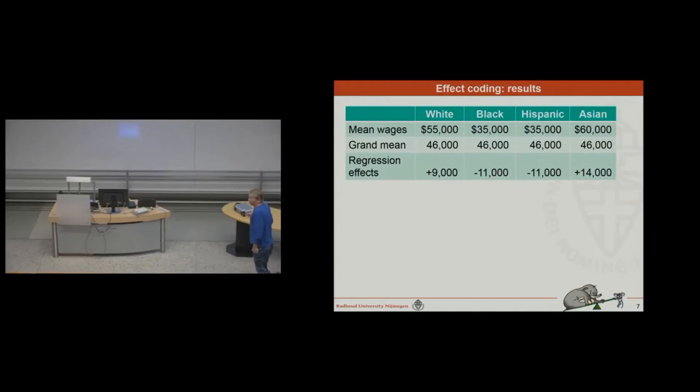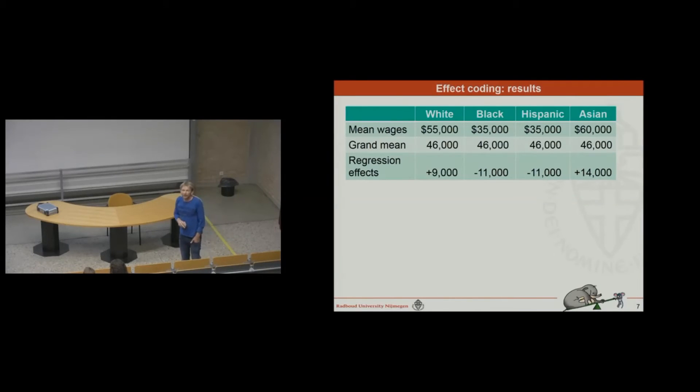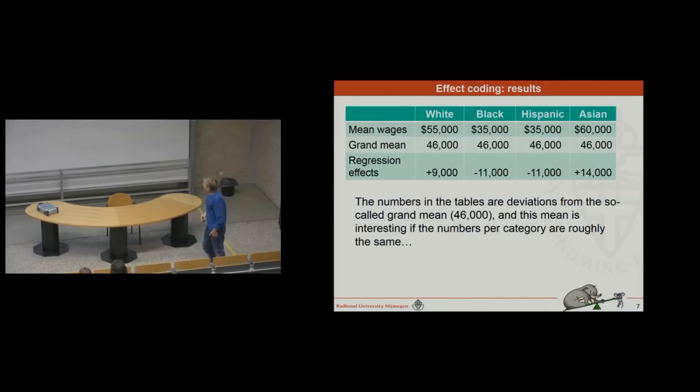And in many cases, this will be a fine solution, because now we can take this as a reference category. How much do these racial categories differ from this grand mean? That is called effect coding. Now, if you take 46, the grand mean, as a point of reference, and we take the difference, we get for the white population, plus 9 grand. That is the deviation from the grand mean. And for the blacks, we have minus 11 grand. Same goes for the Hispanics, and for the Asians, we have plus 14. So these numbers here are the outcomes if you run a regression analysis using effect coding. We have an example of the whites with 55 grand. We have the grand mean of 46, and the difference will be plus 9,000, minus 11 grand, minus 11 grand, and plus 14,000. So the deviations I just showed you here, all of these are deviations from the so-called grand mean.